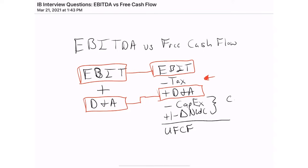The term you'll hear around capex and working capital is capital intensity. This means how much capital do I have to reinvest for every dollar I make in the business. It's more of a concept: if I make a hundred dollars, do I have to invest all of that back, or very little of it? High capital intensity means I'm reinvesting a lot; low capital intensity means I'm reinvesting very little and get to keep those dollars.